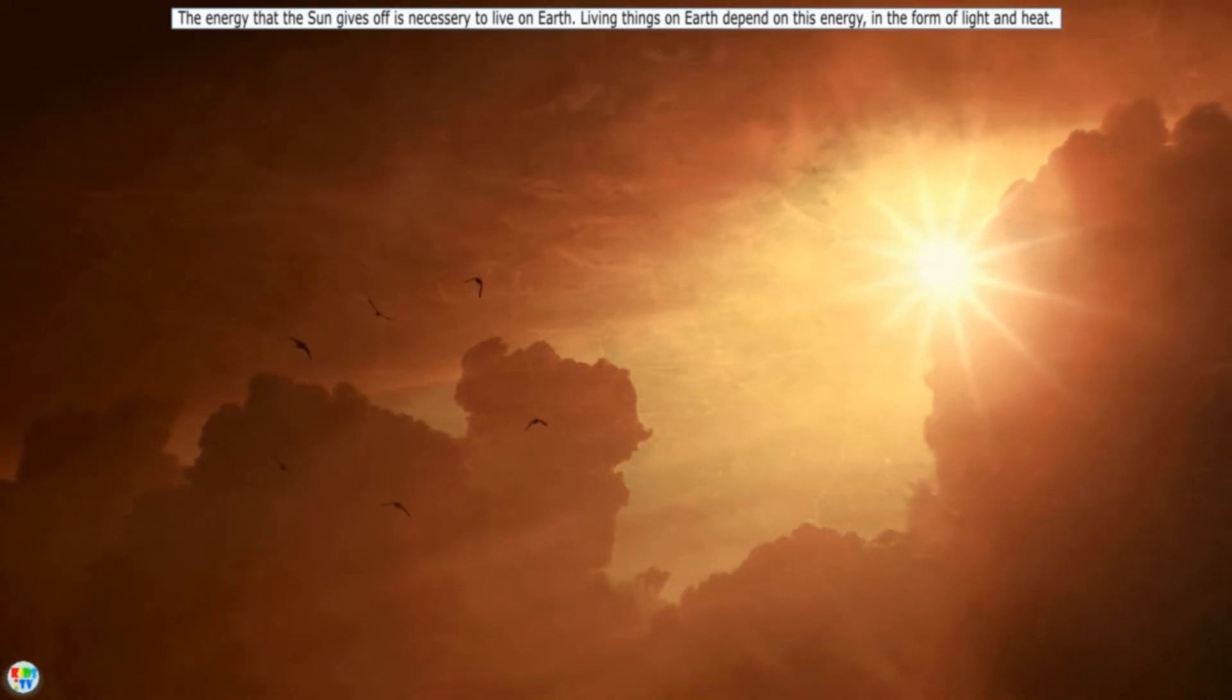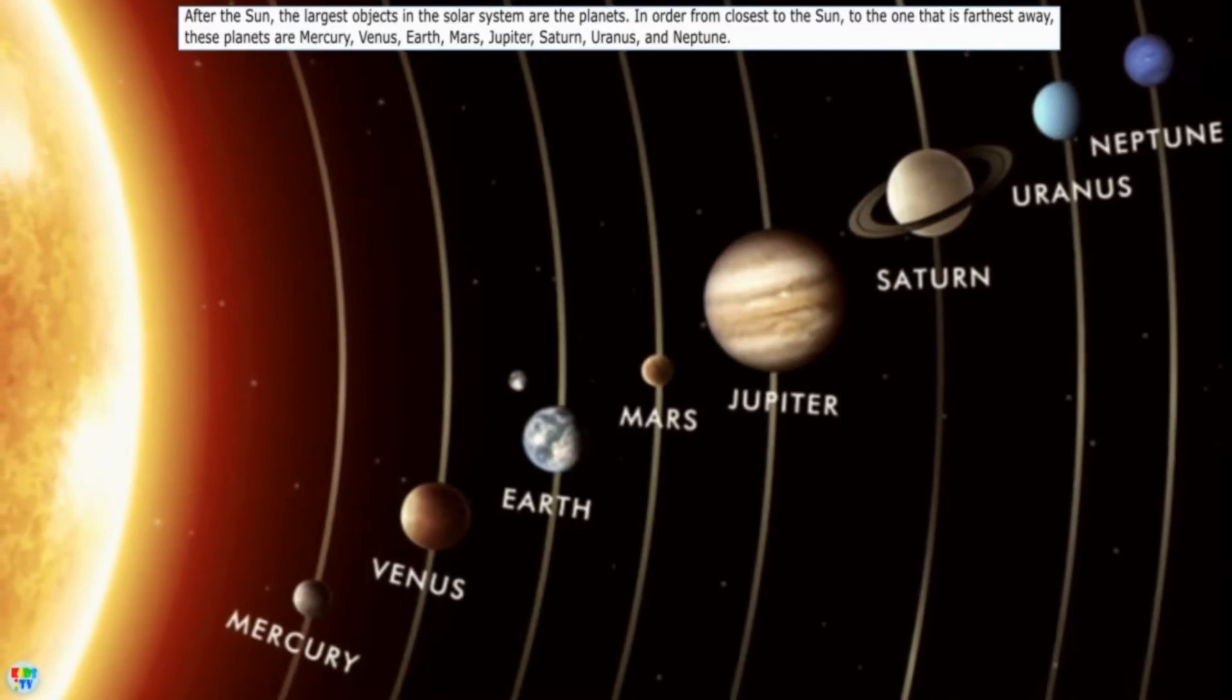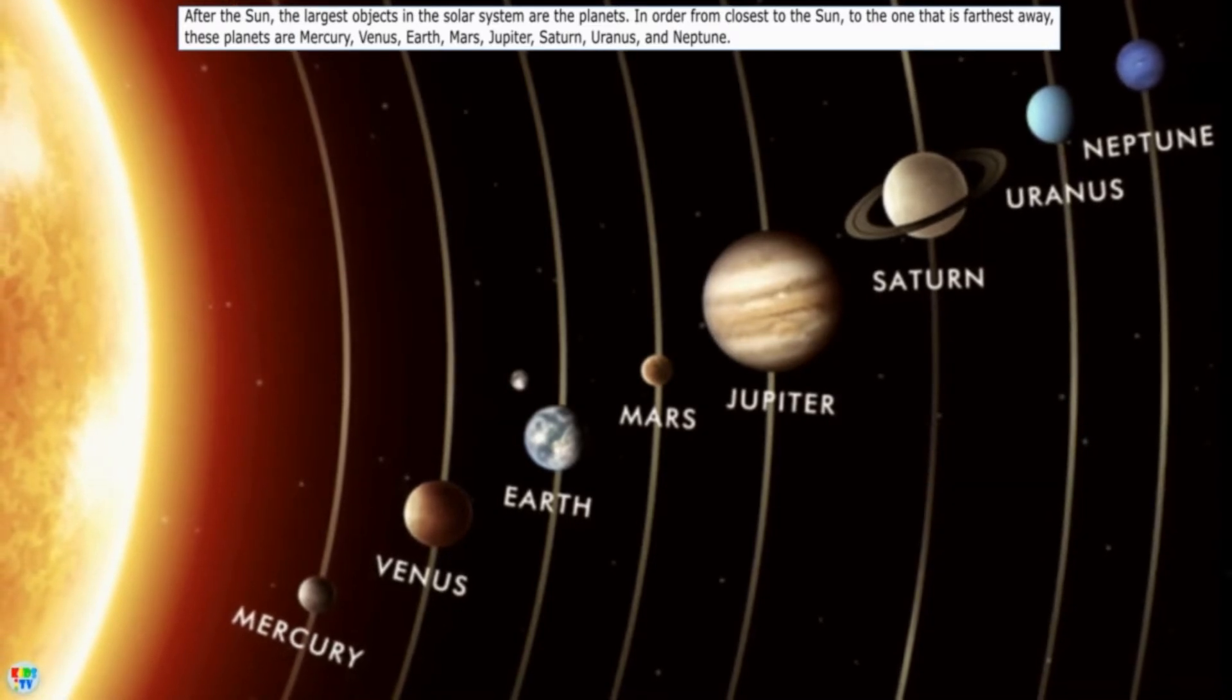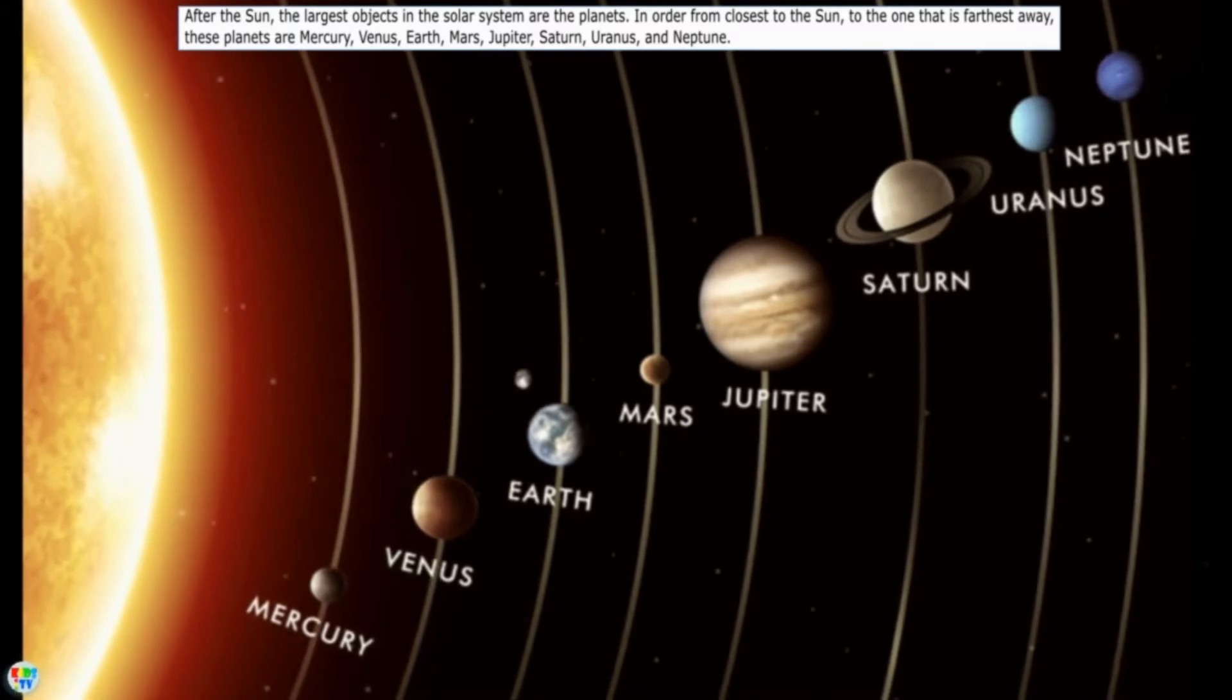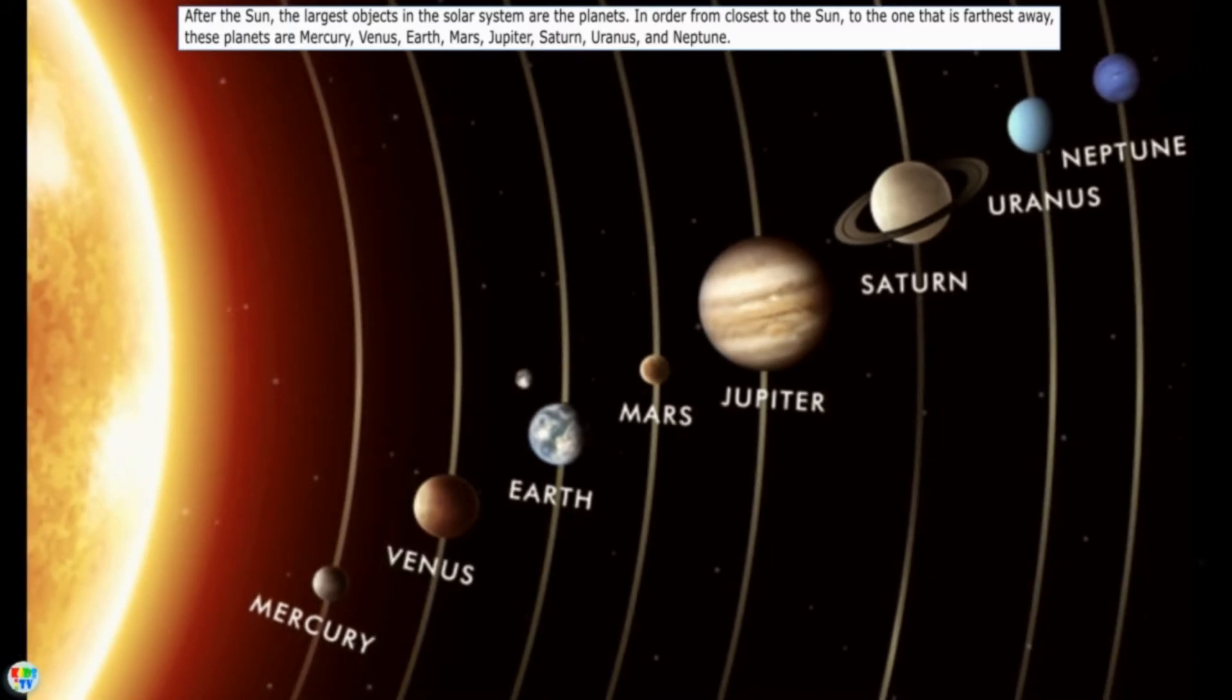After the Sun, the largest objects in the solar system are the planets. In order from closest to the Sun to the one that is farthest away, these planets are Mercury, Venus, Earth, Mars, Jupiter, Saturn, Uranus, and Neptune.